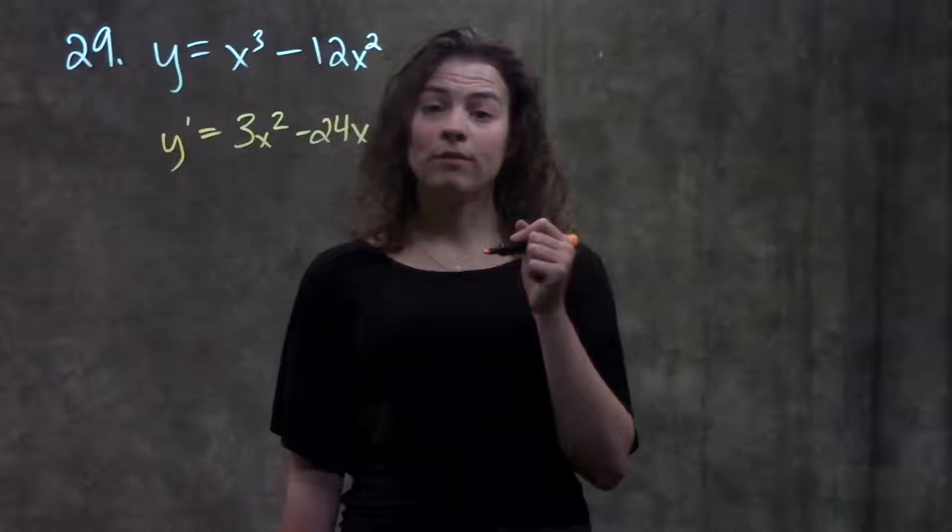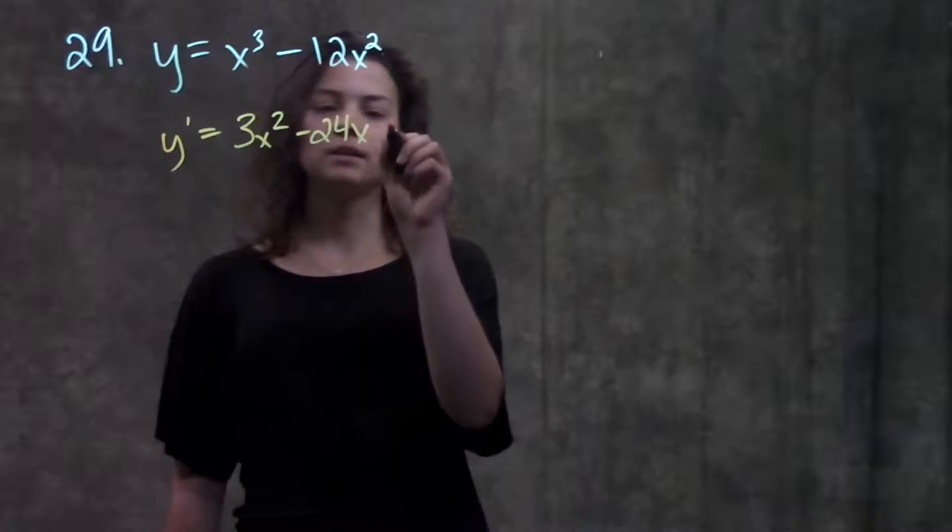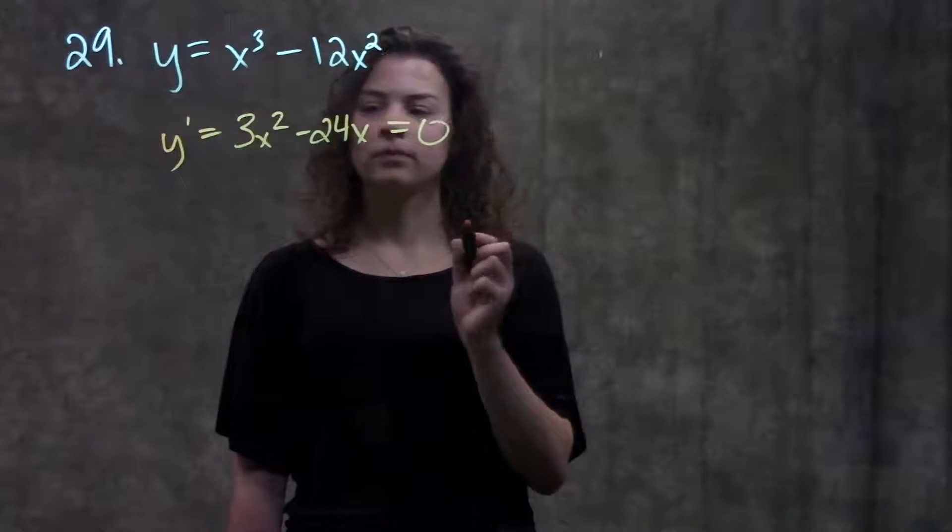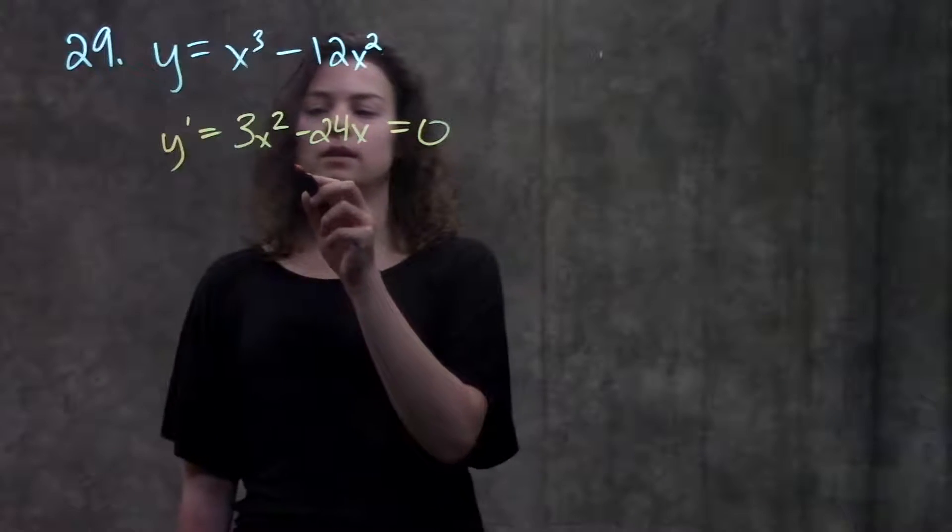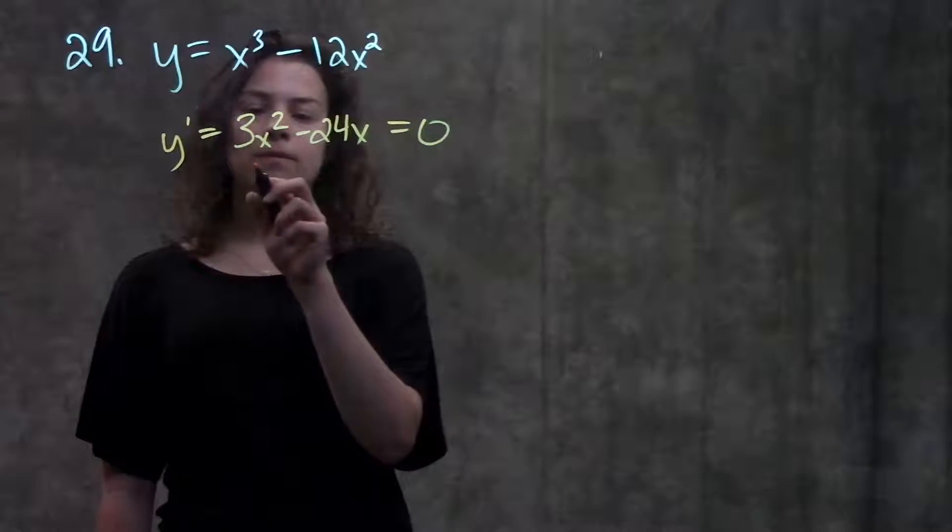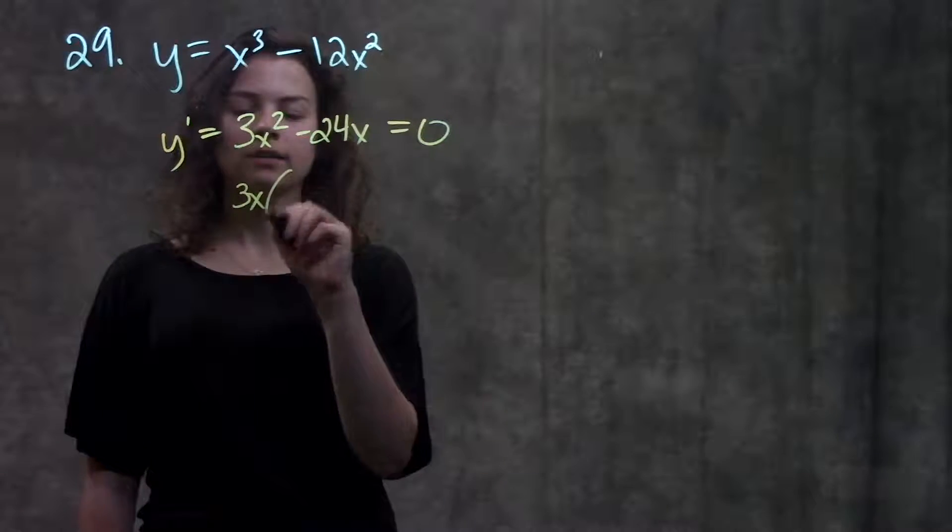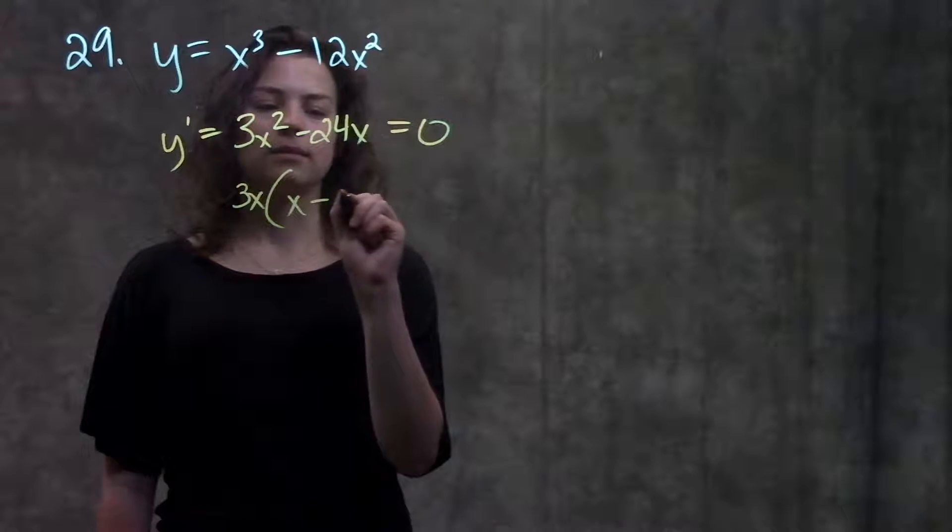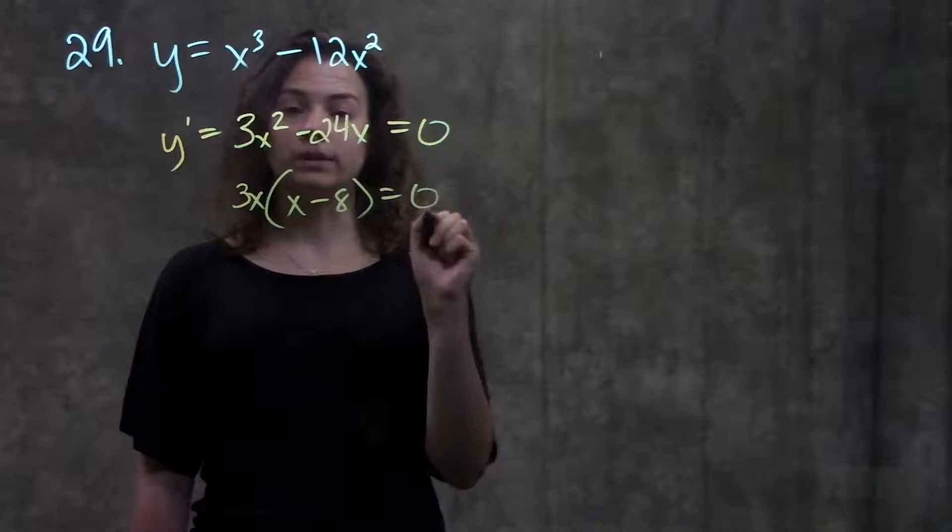Remember, critical points are wherever the derivative equals 0. So I'm going to take this, set it equal to 0, and solve for my x's. In order to solve for my x's, I'm going to take out a common factor. The greatest common factor between these terms is 3x, and that leaves me with x minus 8 equals 0.